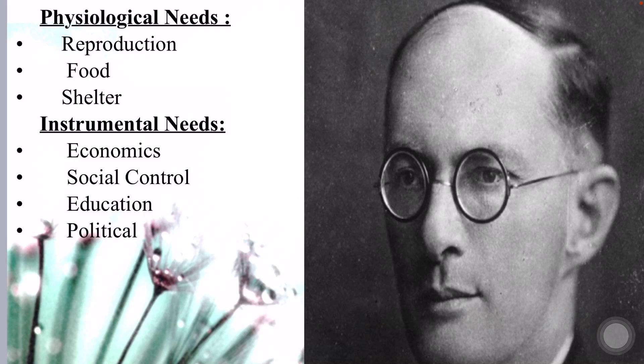Malinowski talks about biocultural or psychological functionalism, and Radcliffe-Brown talks about structural functionalism. According to Malinowski, individuals have physiological needs — that is, reproduction, food and shelter — and social institutions exist to meet these needs. There are also cultural drive needs and four basic instrumental needs, which consist of economic, social control, education and political organization, that require institutional devices.